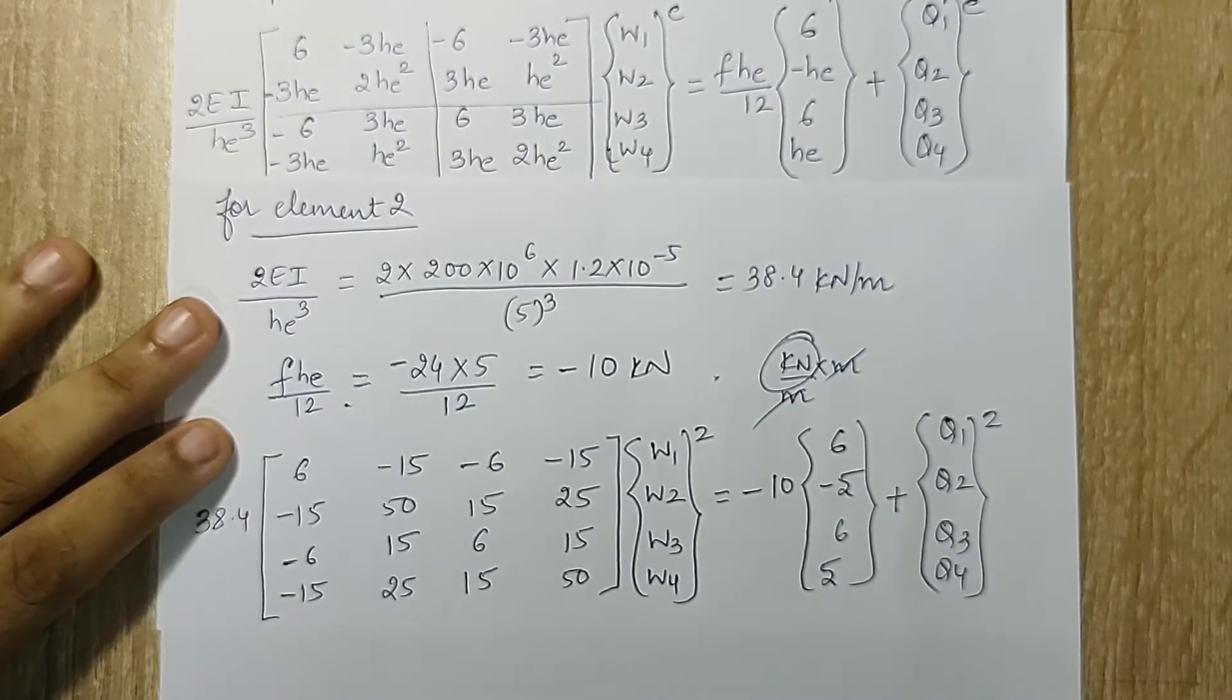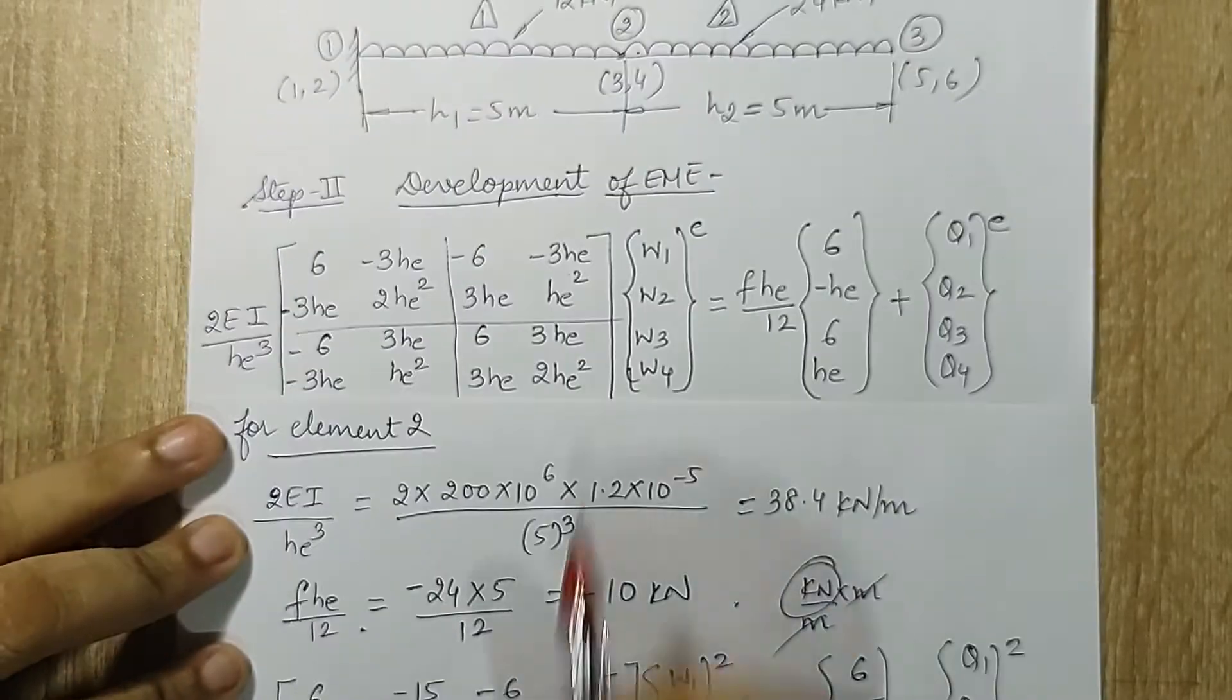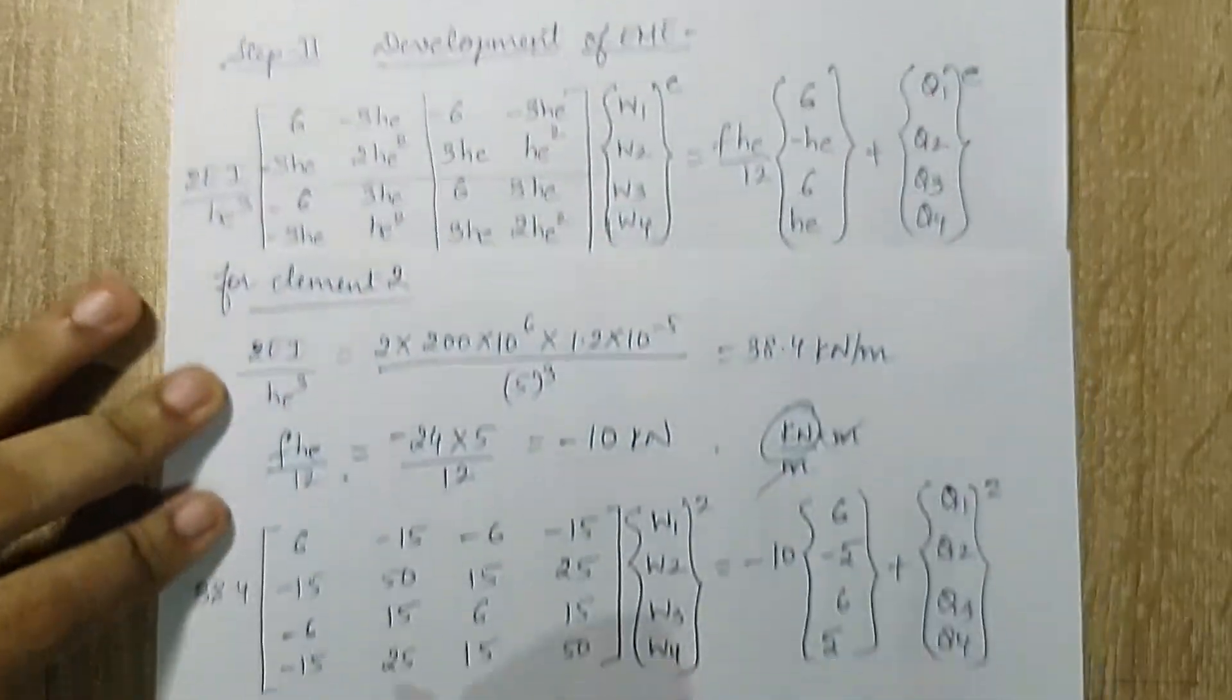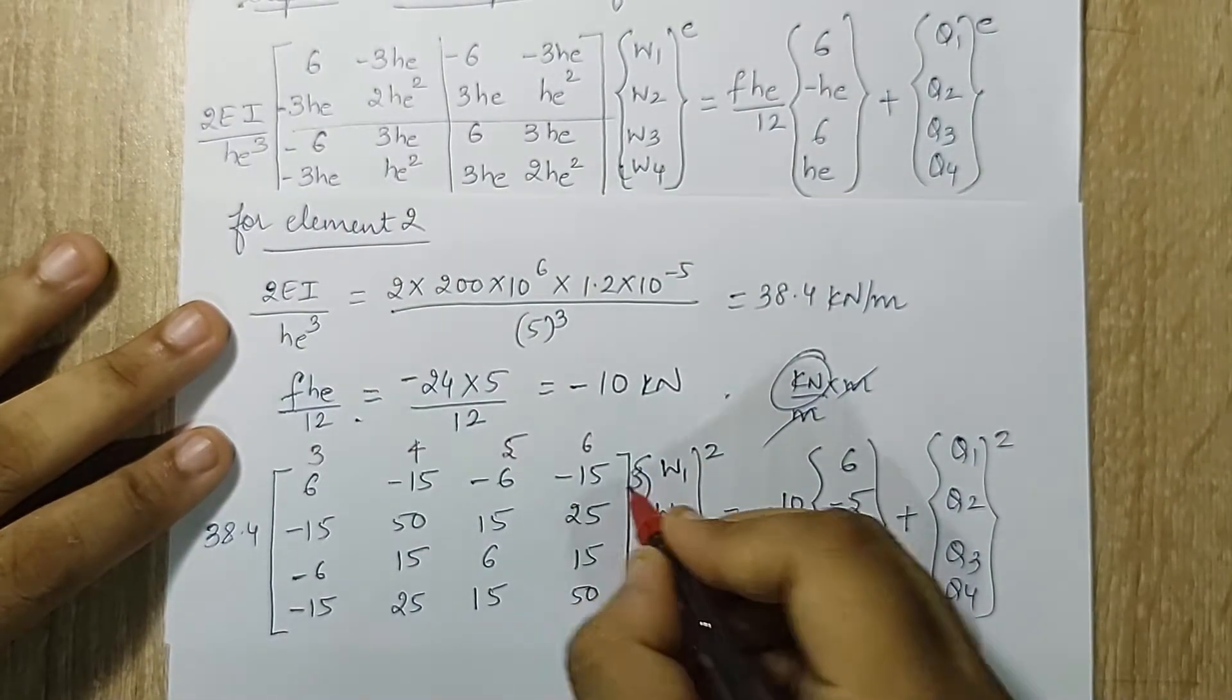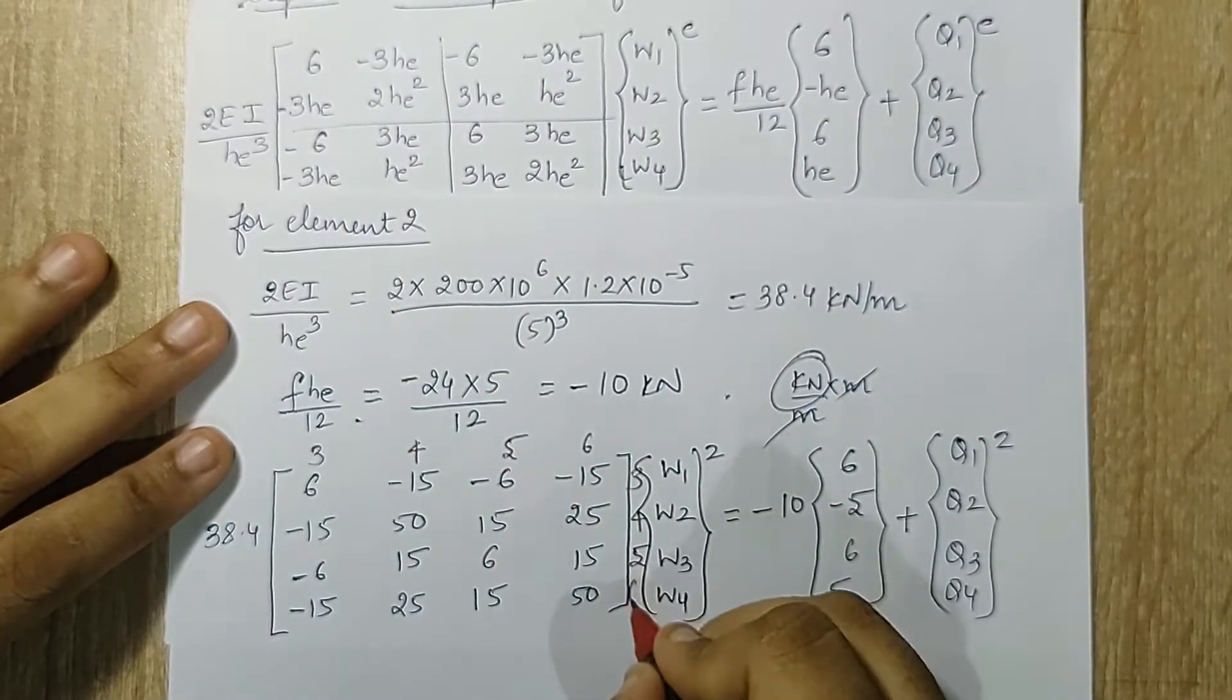Now let's substitute these two values in the equation. Element 2 is between node 2,3. So the degree of freedom is 3,4,5,6.